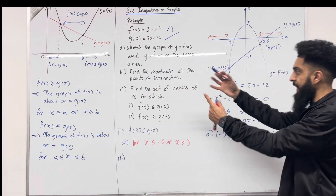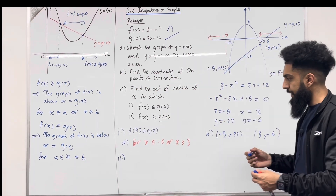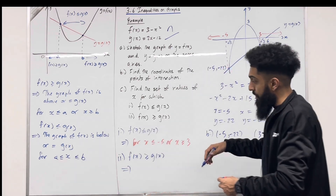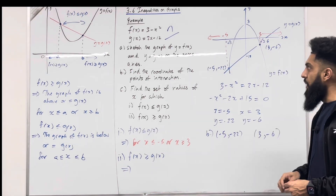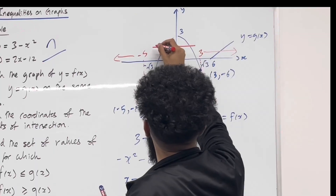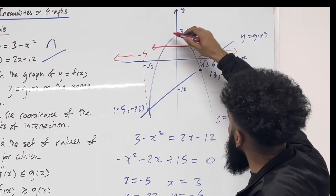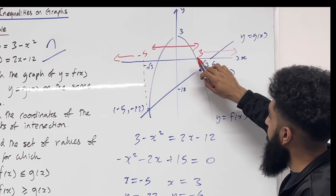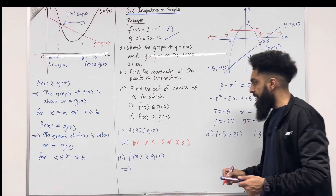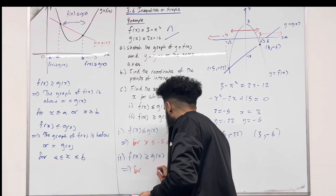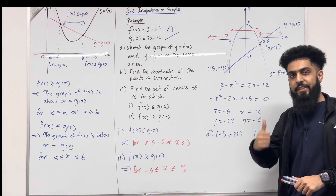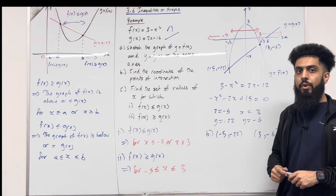Moving on to Part C, part 2: find the set of values of x for which f(x) ≥ g(x). f(x) ≥ g(x) implies the graph of f(x) is above or equal to the graph of g(x). We notice that for x more than or equal to -5 but less than or equal to 3, f(x) is above or equal to g(x). So this inequality is satisfied for -5 ≤ x ≤ 3. And that completes this particular example. If you found this video useful, please don't forget to subscribe.